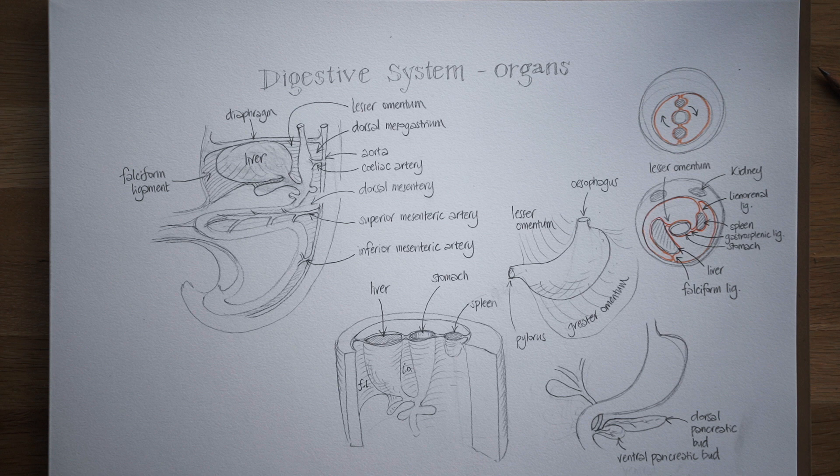That is it for the organs of the digestive system and the spleen. We will return later to look at those kidneys embedded in the posterior abdominal wall when we take a look at the development of the urogenital system. Thank you for watching Lockdown Embryology — I'll be back with more very soon. I'm going to do the respiratory system next. Please like and share with anyone who you think might be interested or find this useful.